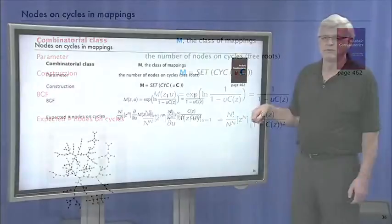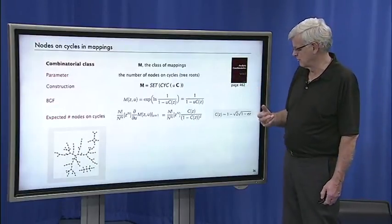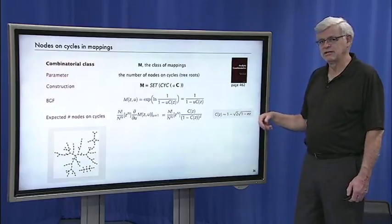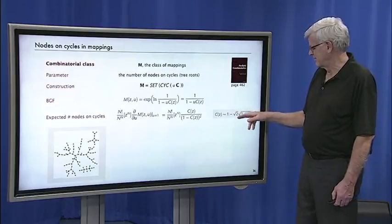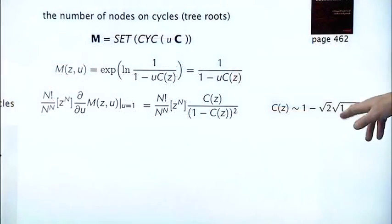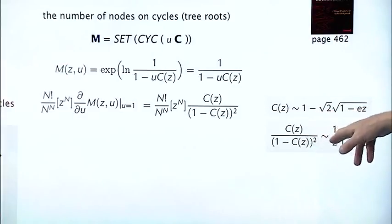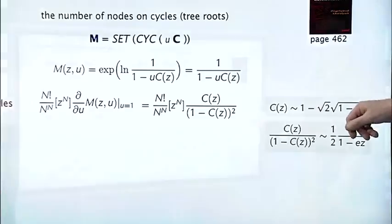But now at this point, with singularity analysis, we have an approximation for that generating function. So we can plug in that approximation. So C(z) equals 1 - √2·√(1-ez). 1-C(z) equals just that. And then if you square it, you get 2(1-ez). And C(z)/(1-C(z))² is asymptotic to ½·1/(1-ez). So you can check that, but that's not too difficult.